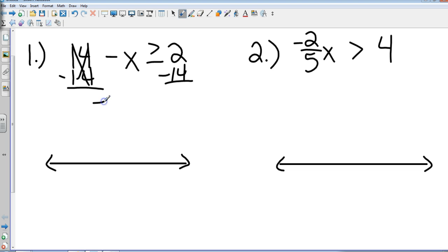So I have negative x greater than or equal to negative 12. I have a problem. What is my problem, Lily? I have a negative variable, so I need to multiply both sides by negative 1. Which gives me x. And then what do I do? Flip the inequality.